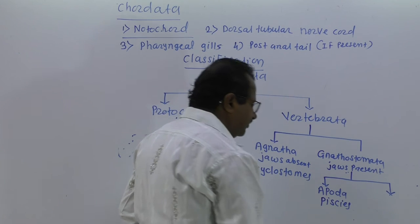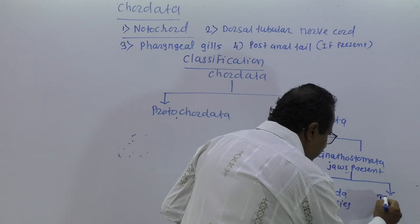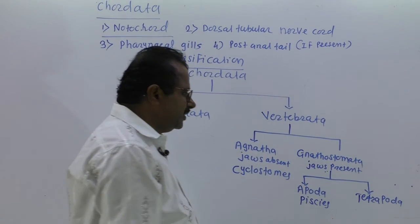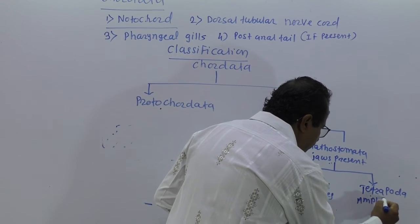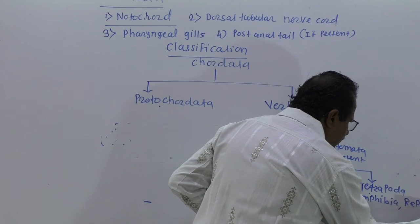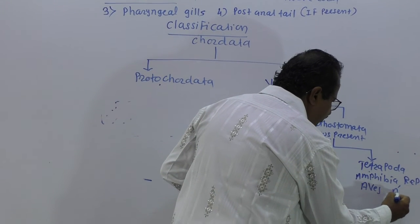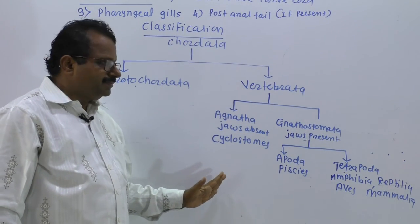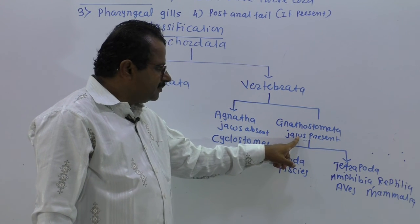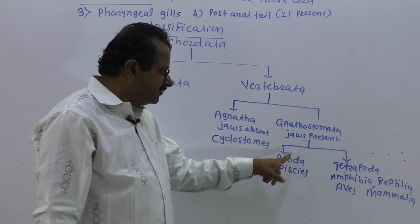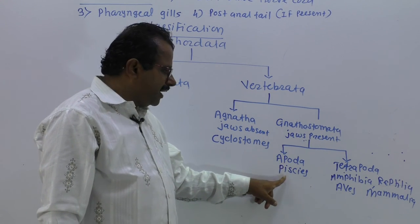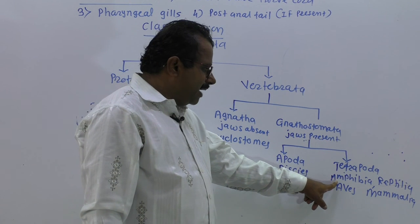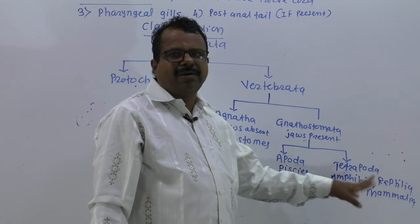Gnathostomata madhe Pisces aani Tetrapoda aahet. Pisces madhe limbs are absent. Tetrapoda madhe four limbs - fore limbs ani hind limbs - asnare Amphibia, Reptilia, Aves, ani Mammalia he chaar groups aahet. Tyancha madhe Gnathostomata manje jbde asnare animals, aap lea - Pisces madhe limbs absent, ani four limbs asnare Amphibia, Reptilia, Aves, Mammalia.